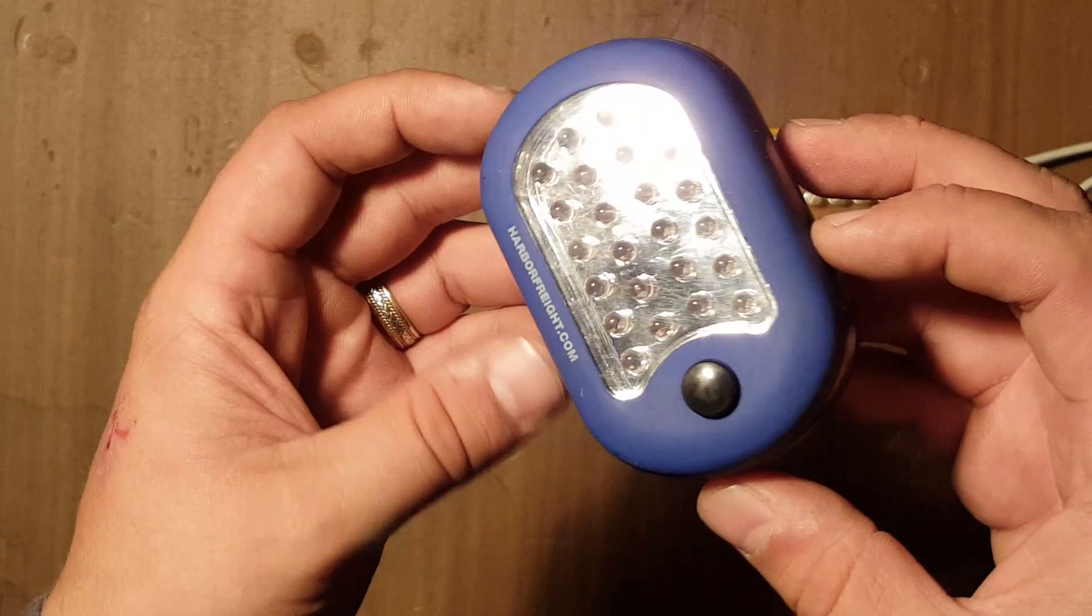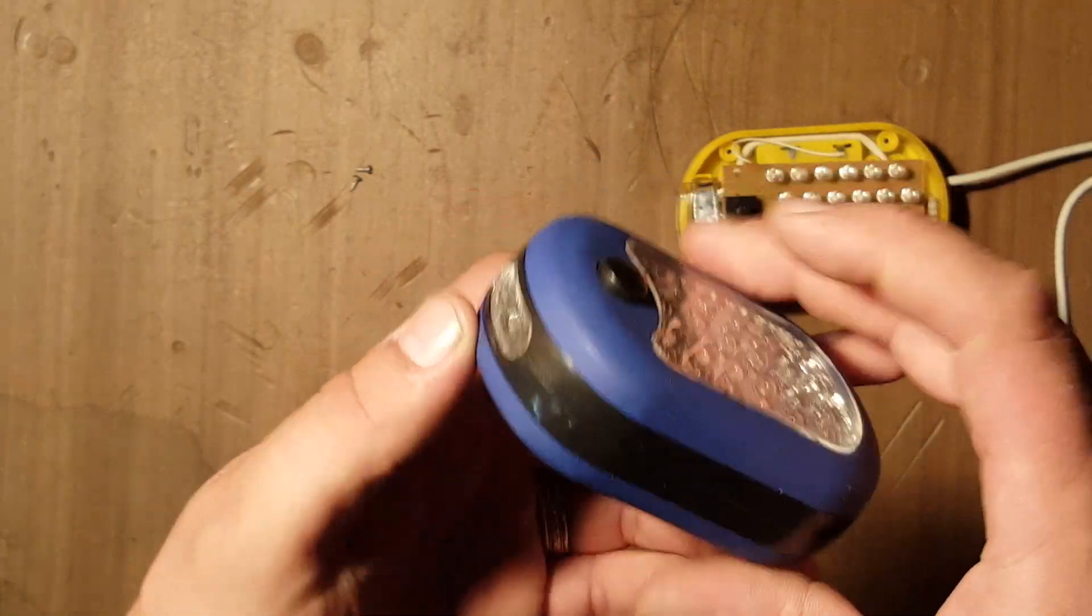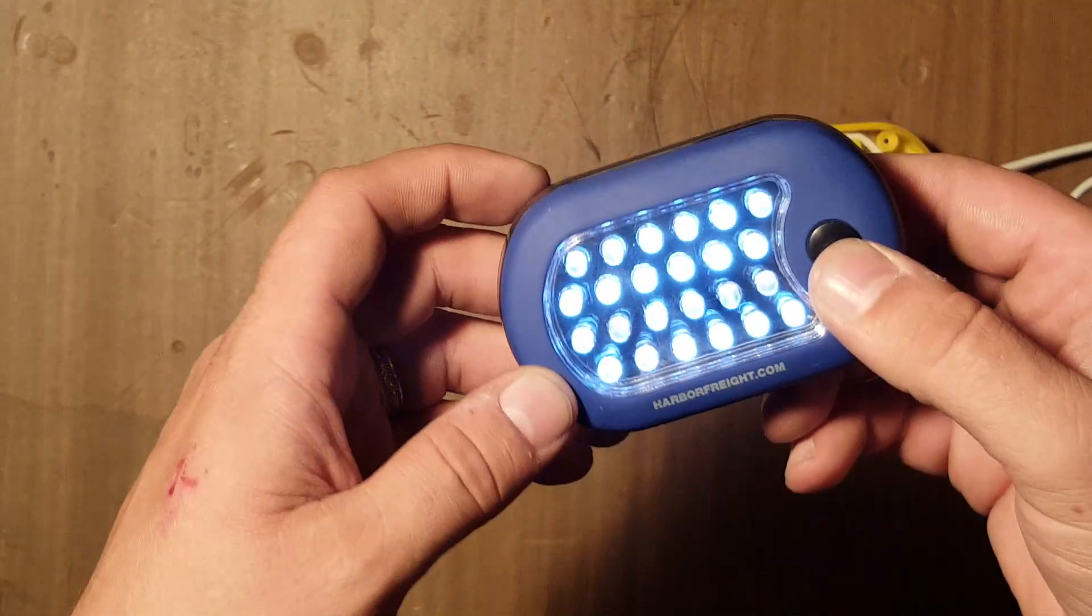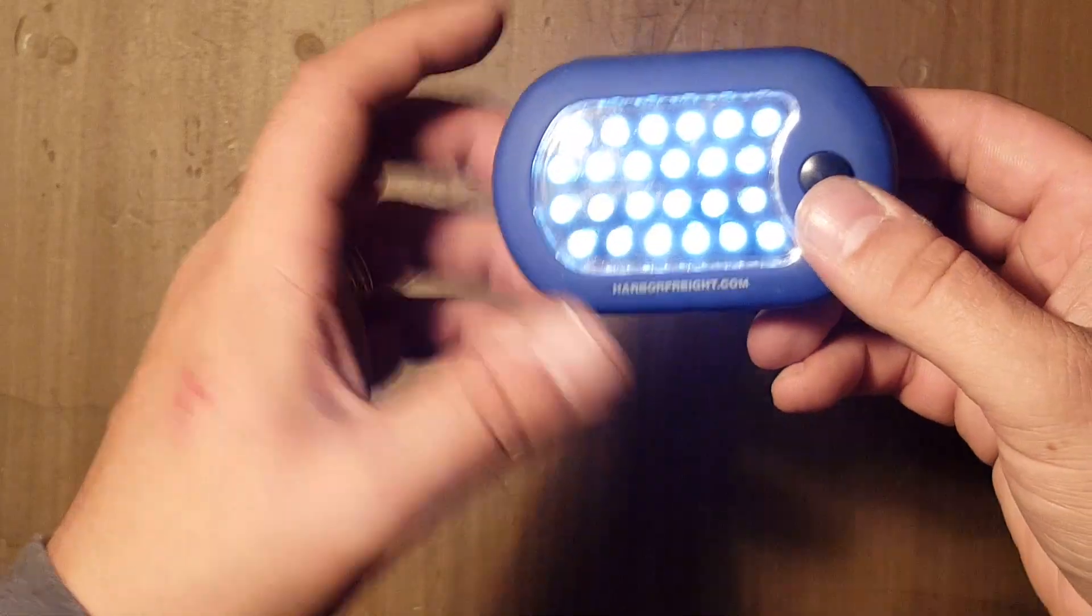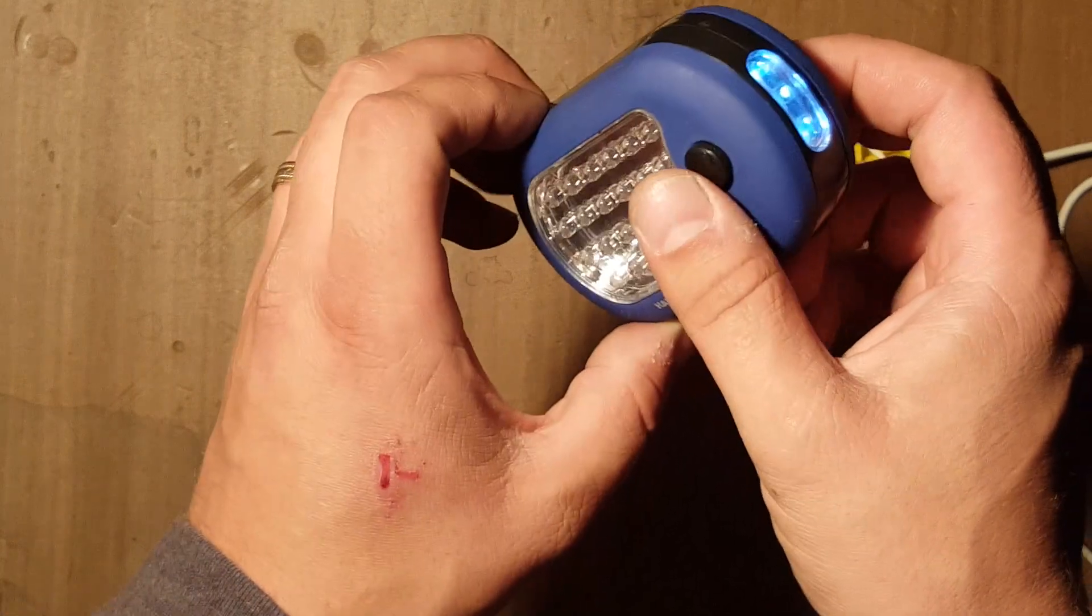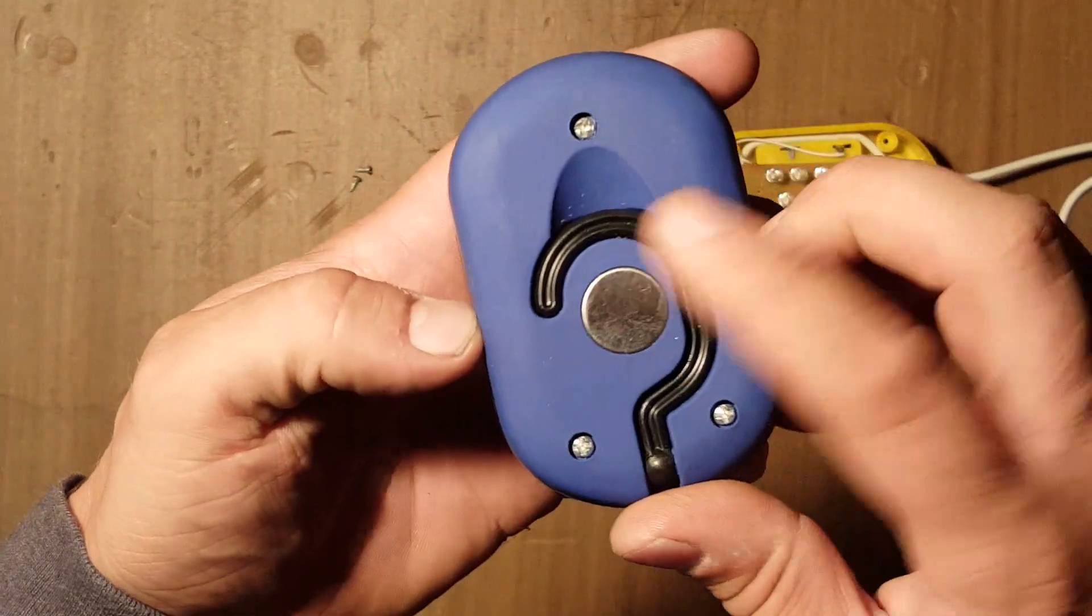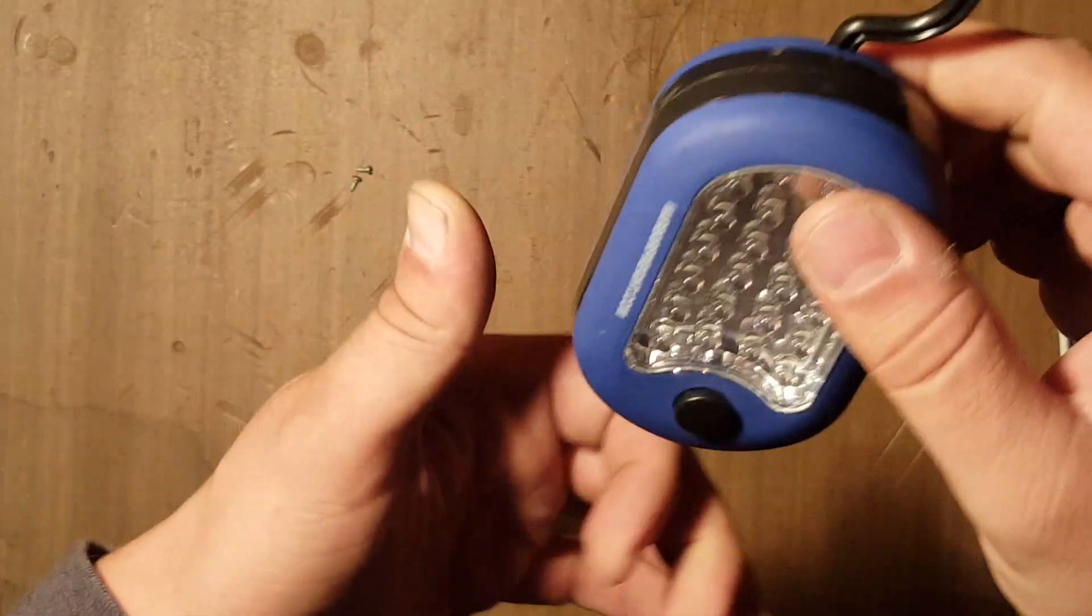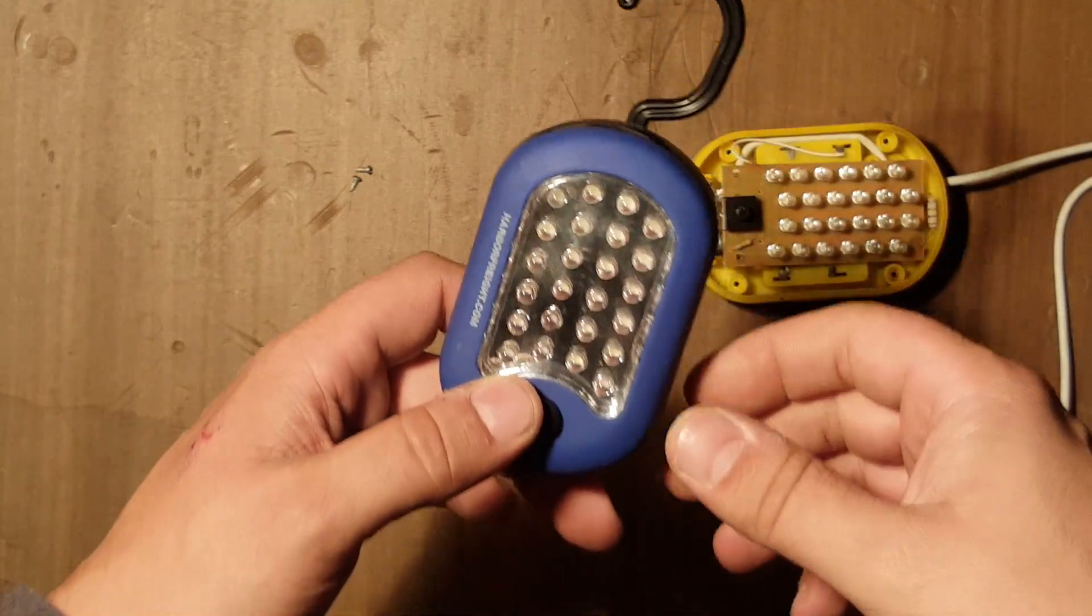I believe the batteries in this one are almost dead, but there's the work light side and the flashlight side of it. They're really handy. They've got a magnetic back as well as a hook so that you can hook them onto whatever it might be that you're working on.